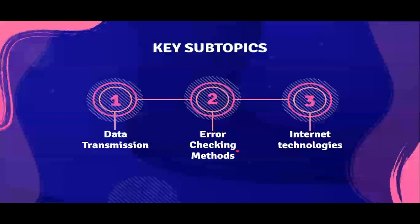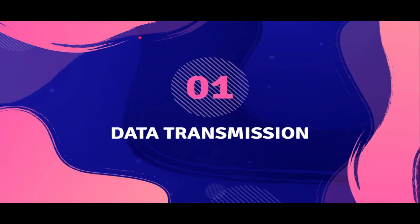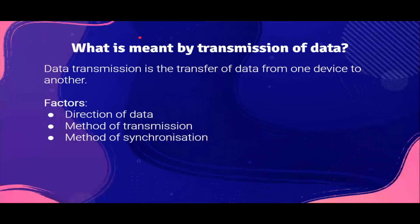There are three main subtopics under this chapter. The first: what is data transmission? Data transmission is the transfer of data from one device to another. There are three factors that affect this: direction of data, method of transmission, and method of synchronization.